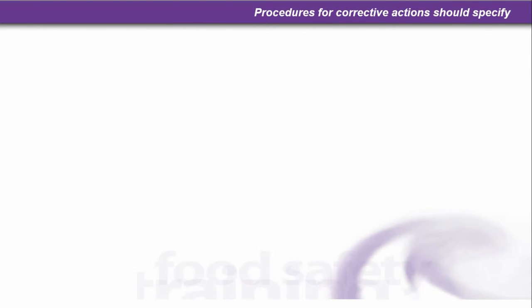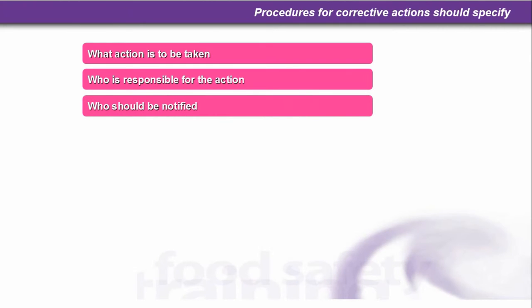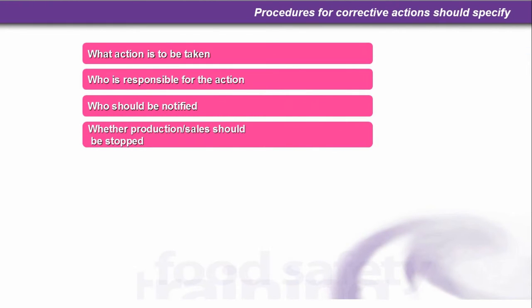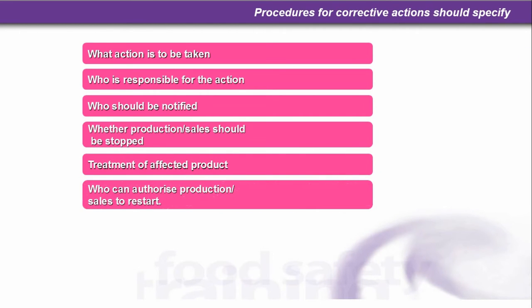Procedures for corrective action should specify: what action is to be taken, who is responsible for the action, who should be notified, whether production or sales should be stopped, treatment of affected product, and who can authorise production and sales to restart.